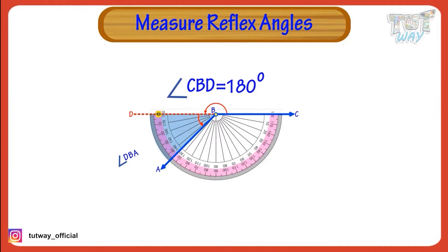Following the outer scale around the protractor, we find that the other arm BA passes through the outer scale at 45 degrees.